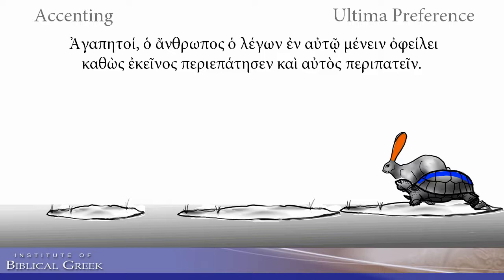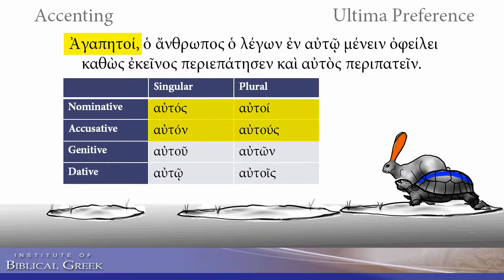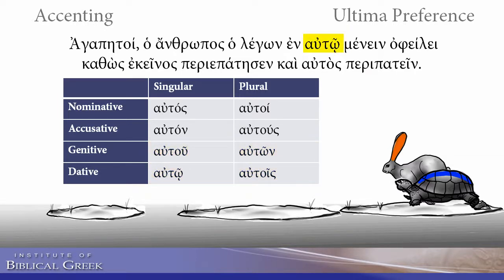Let's take a look at our example sentence and see how many words apply to this ultima preference. First, there's a word accented on its ultima — it's a noun, so it follows the box pattern. The nominative and accusative, and in this case the vocative, all have acutes. If it changes to a genitive or dative case and the ending becomes long, it would have a circumflex. Scanning across, the next word accented on its ultima is 'afto.' Notice it has a circumflex — it applies here because it is a dative with a long ending. If it were nominative, it would have an acute. So it's following our box pattern perfectly.